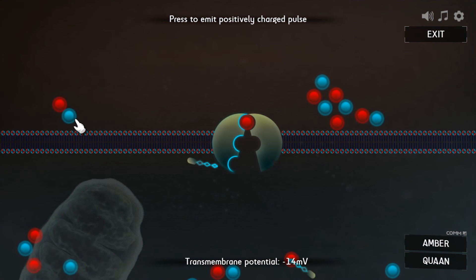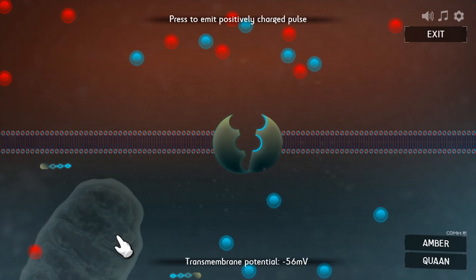For starters the scale is way out. The ions are about ten times bigger than they should be and the mitochondria is about ten times smaller than it should be.